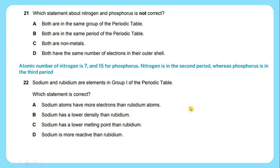Question number 22: Sodium and rubidium are elements in group 1 of the periodic table. Which statement is correct? The answer will be B - sodium has a lower density than rubidium.